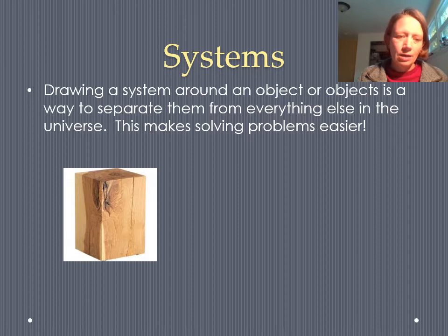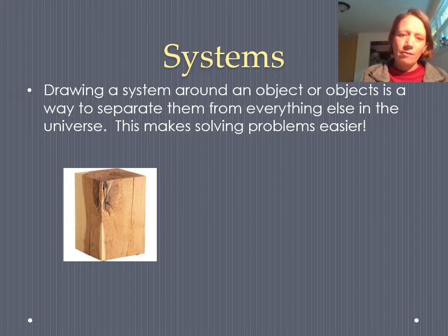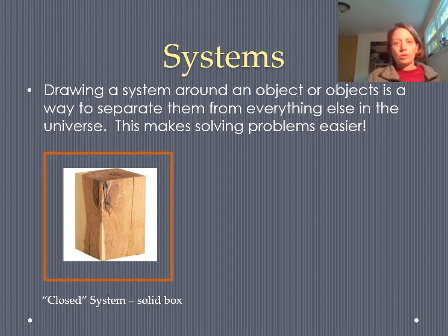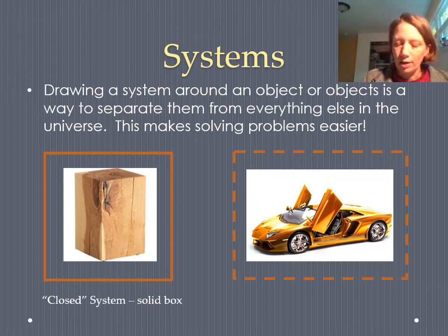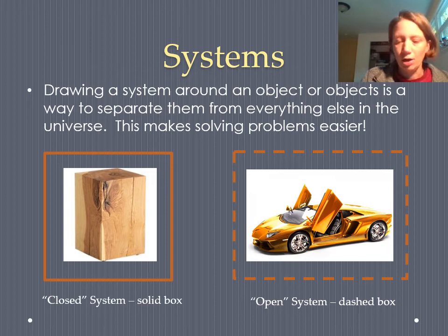Let's say we have a physics problem with this block of wood — there are plenty of problems with blocks of wood: sliding, being yanked, dropped. If I wanted to make this block of wood into a system, I would draw a box around it and say the wood is the system. There are going to be two kinds of systems. If I want this wood in what's called a closed system, I draw a solid box around it. Or if I wanted an open system, I draw a dashed box. When you see these boxes around things, you'll know that I've created a system.